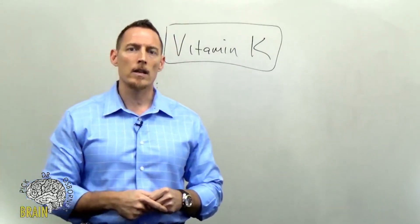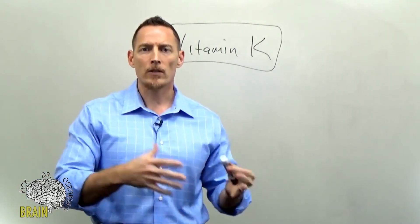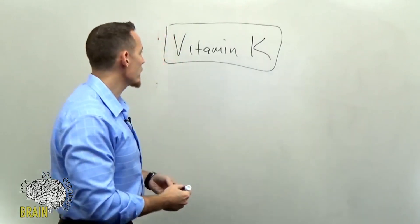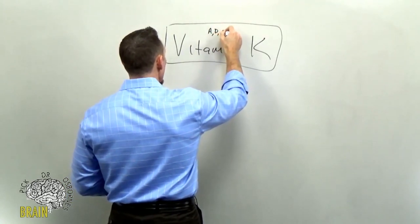Like many of the other vitamins, we have vitamins that are classified in two different categories, basically fat-soluble and water-soluble. And vitamin K is in that fat-soluble category, along with vitamin A, vitamin D, and vitamin E.